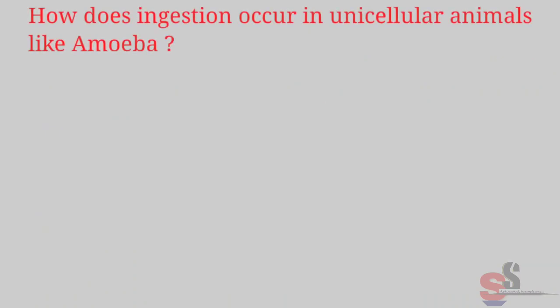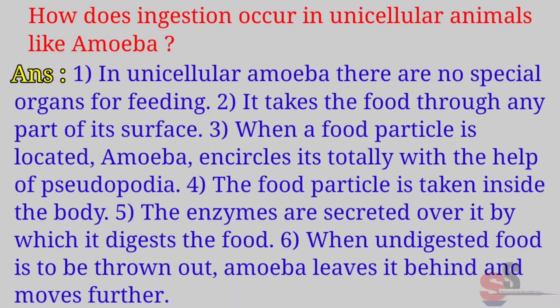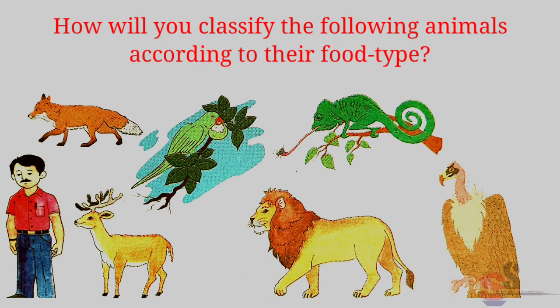Can you tell? Textbook page 31: How does ingestion occur in unicellular animals like Amoeba? Answer: In unicellular Amoeba, there are no special organs for feeding. It takes food through any part of its surface. When a food particle is located, Amoeba encircles it totally with the help of pseudopodia. The food particle is taken inside the body and enzymes are secreted over it, by which it digests the food. When undigested food is to be thrown out, Amoeba leaves it behind and moves further.